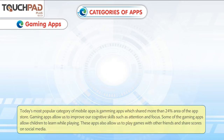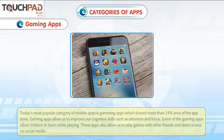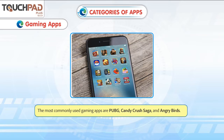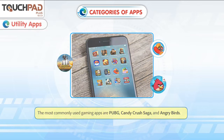Gaming Apps. Today's most popular category of mobile apps is Gaming Apps, which shares more than 24% of the App Store. Gaming Apps allow us to improve our cognitive skills such as attention and focus. Some gaming apps allow children to learn while playing. These apps also allow us to play games with friends and share scores on social media. The most commonly used gaming apps are PUBG, Candy Crush Saga and Angry Birds.